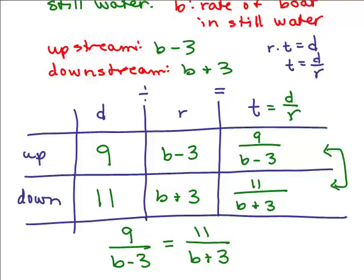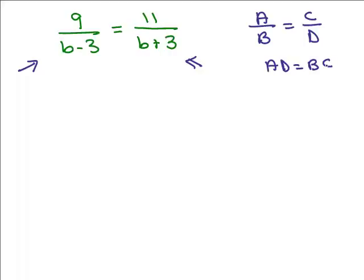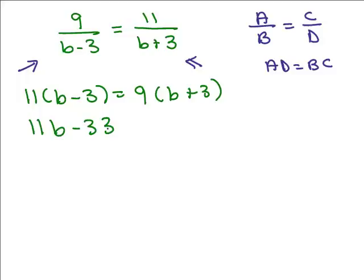Now we're going to solve that equation. This is a proportion — a single fraction equal to another single fraction — so I'll solve it by cross-multiplying. Multiplying (B minus 3) times 11 gives the same thing as multiplying 9 times (B plus 3). That gives us: 11 times (B minus 3) equals 9 times (B plus 3), which expands to 11B minus 33 equals 9B plus 27 after applying the distributive property.